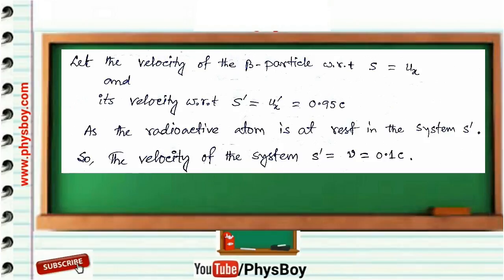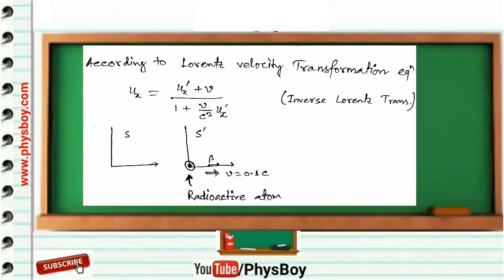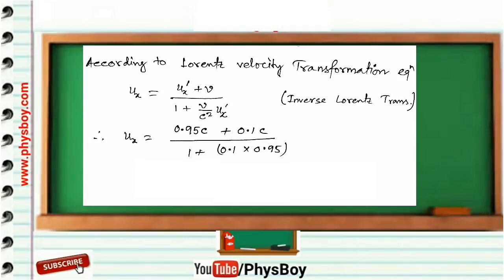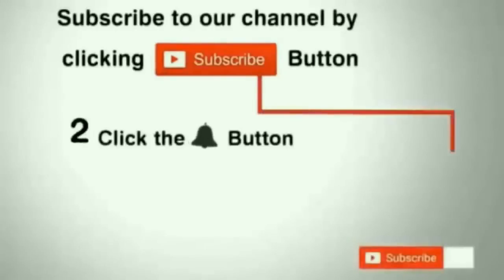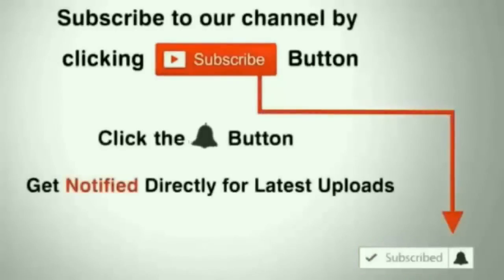Since the radioactive atom is at rest in S', the velocity of S' equals v = 0.1c, the velocity of the radioactive atom. Using the inverse Lorentz velocity transformation: uₓ = (uₓ' + v)/(1 + v·uₓ'/c²). Substituting uₓ' = 0.95c and v = 0.1c, we get uₓ = 0.958c. Option A is the correct answer. Please subscribe to our channel by clicking the subscribe button and click the bell icon to enjoy the latest uploads.